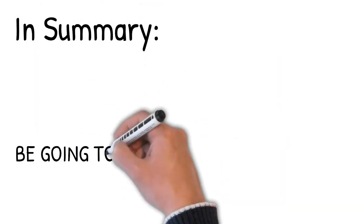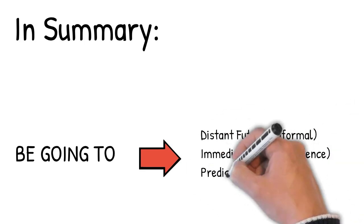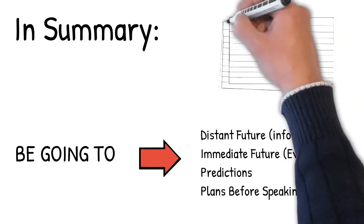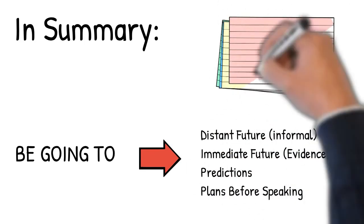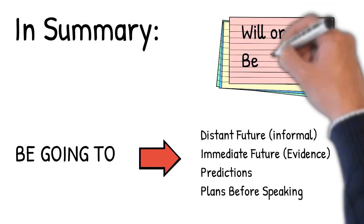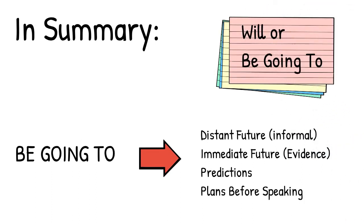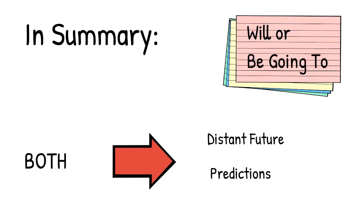And be going to is used for distant future, especially for informal situations, immediate future, when there is evidence now that something's going to happen in the next moment, for predictions, and plans before speaking. That's a big one. And just a reminder that both are used for the distant future and prediction.